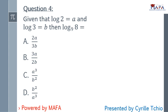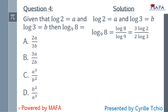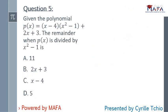Question four: given that log 2 equals a and log 3 equals b, find log₉8 in terms of a and b. We express log₉8 using change of base: log₈ base 10 over log₉ base 10. Since 8 equals 2³, we get 3 log 2 in the numerator, and since 9 equals 3², we get 2 log 3 in the denominator. Substituting, log₉8 equals 3a over 2b. The answer is B.